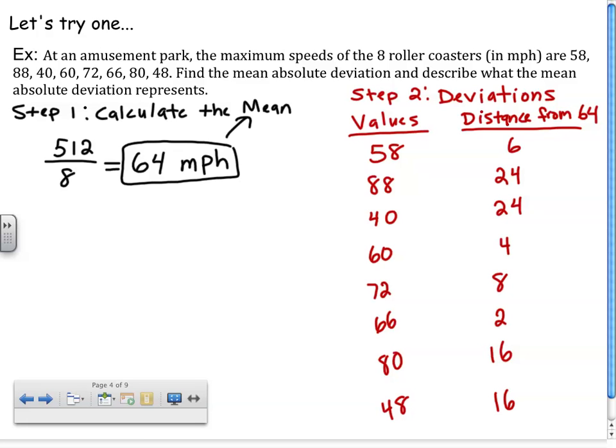Now, step 3 is to find the mean of those deviations. So, we are going to average the deviations. Well, if we add all of those together, we end up with a nice easy value of 100. 6 plus 24 is 30. Add that to 24, and you get 54. Plus 4 is 58. Plus 8 is 66. Plus 2 is 68. And then if you add 32, you get 100. And then if you divide that by 8, you get 12.5.